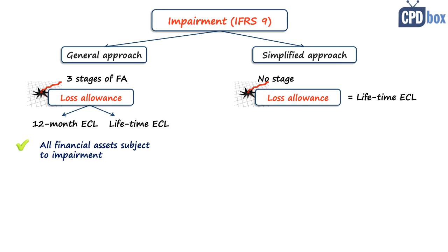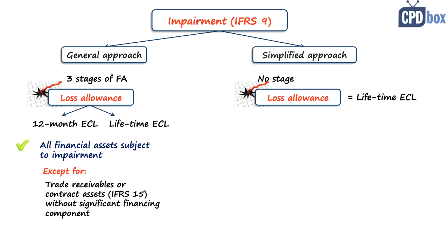You should apply the general approach for all financial assets subject to impairment, except for trade receivables or contract assets under IFRS 15 without a significant financing component — for these you must apply the simplified approach. The simplified approach can be applied only to trade receivables, most contract assets under IFRS 15, and lease receivables under IFRS 16 if you choose to. For more detail and examples of this application, visit cpdbox.com.